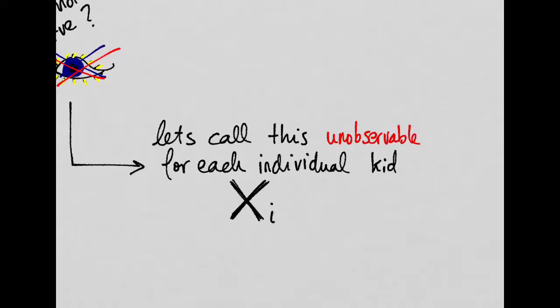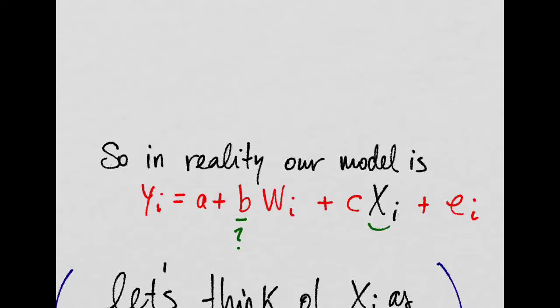Well, we can call this an unobservable that is specific for each individual kid. And just X. Think of this like characteristics that we can't really get data on. For example, socioeconomic conditions of the family of that kid.